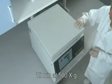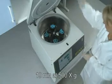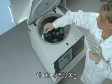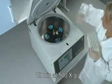Centrifuge for 10 minutes at 500 times G. Calculate the correct RPM for 500 times G for your centrifuge.